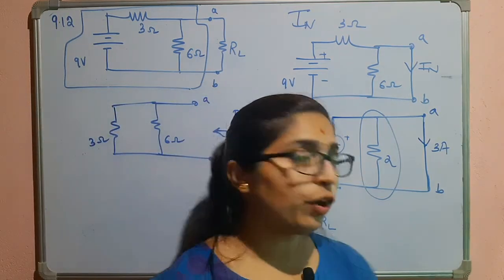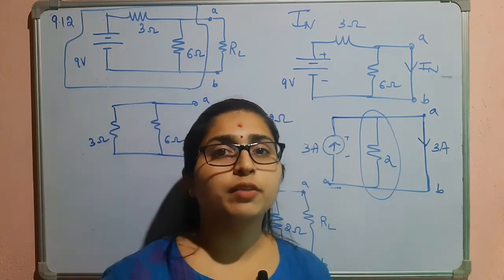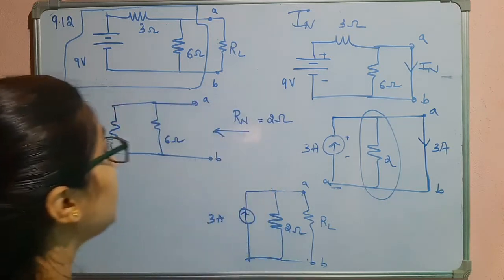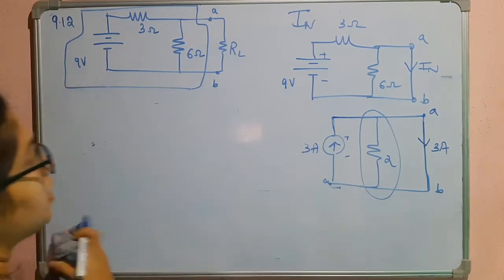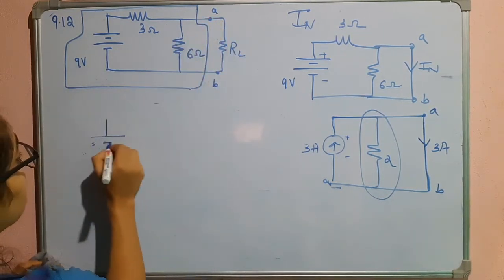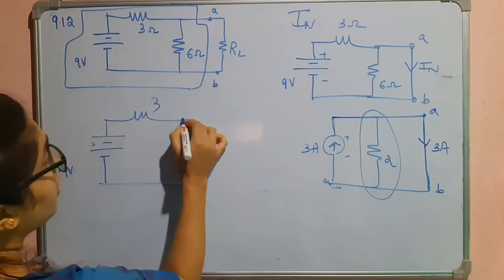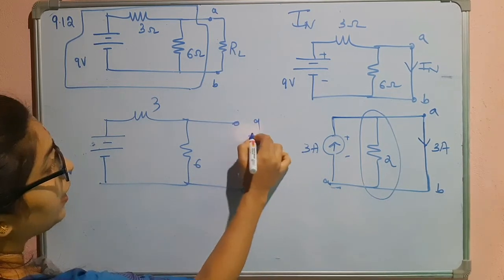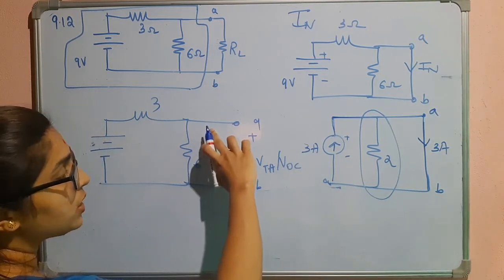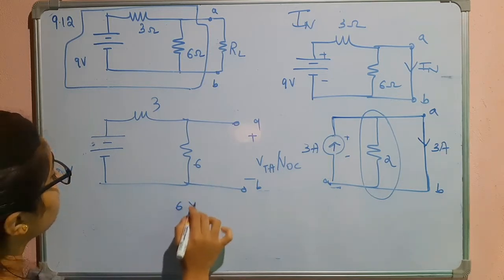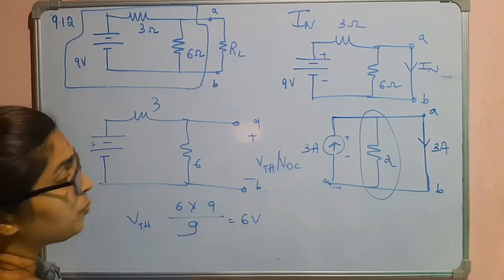If you are not comfortable finding the short circuit current, but are more comfortable finding the Thevenin's voltage, you can find the open circuit voltage across terminals a and b. Here we have 9 volts, 3 ohms, and 6 ohms. Making the terminals open, we measure Vth — the open circuit voltage across the 6 ohm resistor. Applying the voltage divider rule: 6 times 9 divided by (3 plus 6) equals 6 volts.